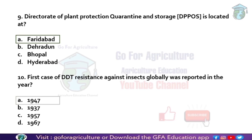Next: the first case of DDT resistance against insects globally was reported in 1947. DDT was originally used as a mosquito repellent. After using it, scientists observed that house flies started gaining resistance against DDT — this is one of the reasons why DDT is banned. The first case of DDT resistance against insects was globally reported in 1947.